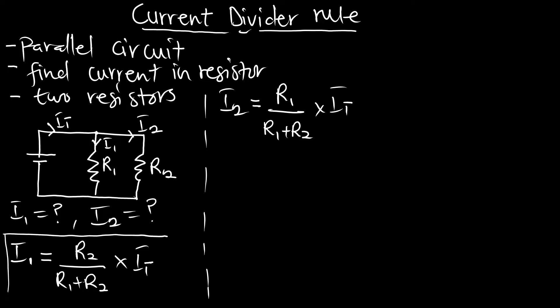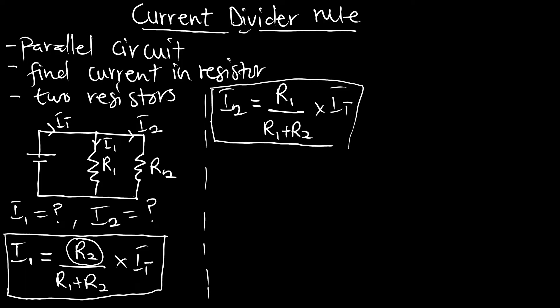Pay attention: the current i1 passing through resistor one uses R2 in the numerator. Most students confuse this by using R1 here - this is supposed to be R2. Although we want current in resistor one, the formula is R2 on R1 plus R2, multiplied by the total current. When we come to current in resistor two, instead of R2 we use R1: R1 on R1 plus R2, multiplying the total current. This formula can be proved as to why we have it that way.